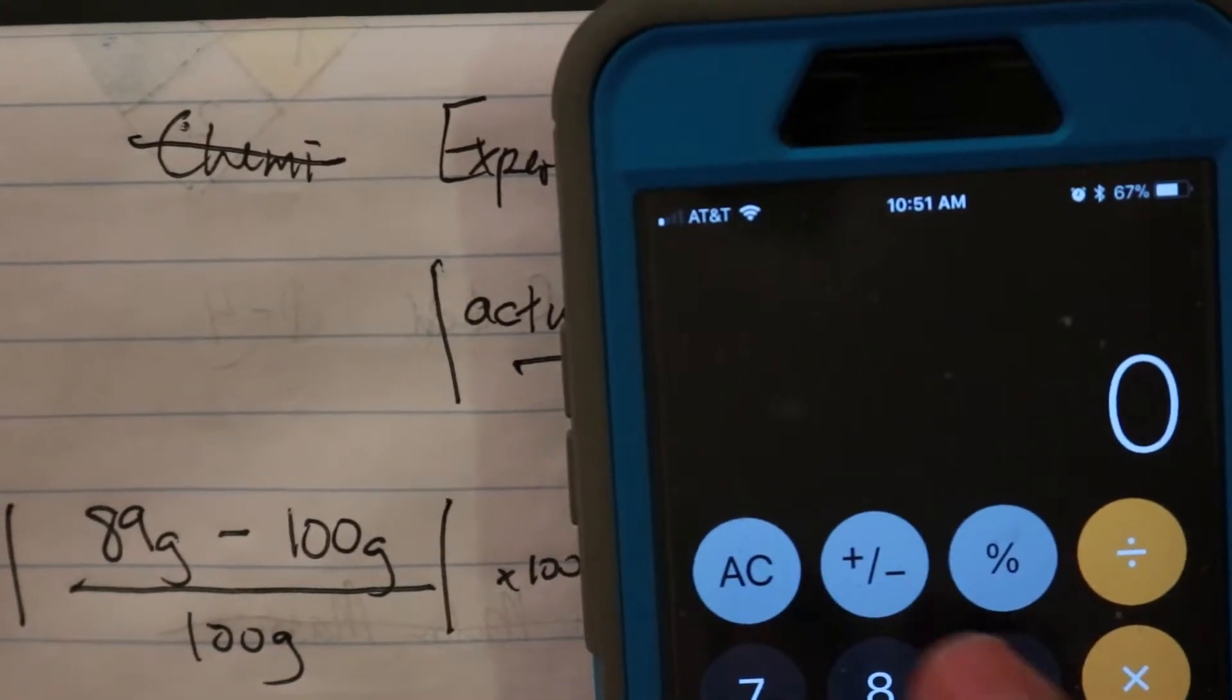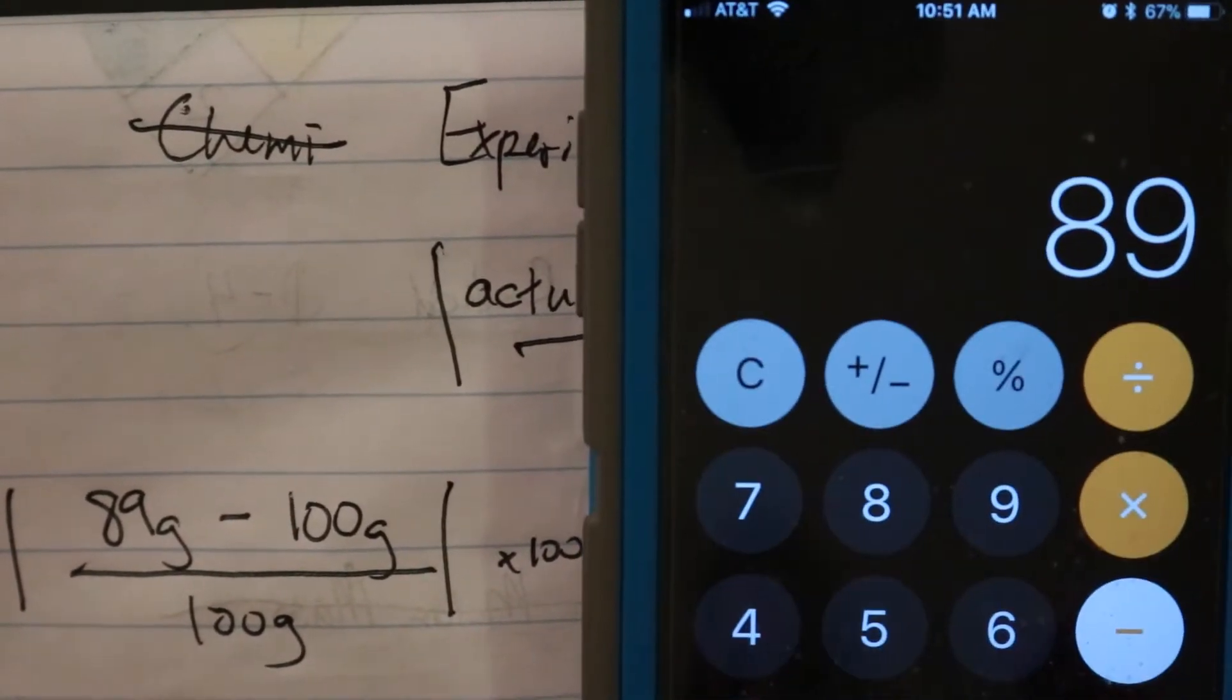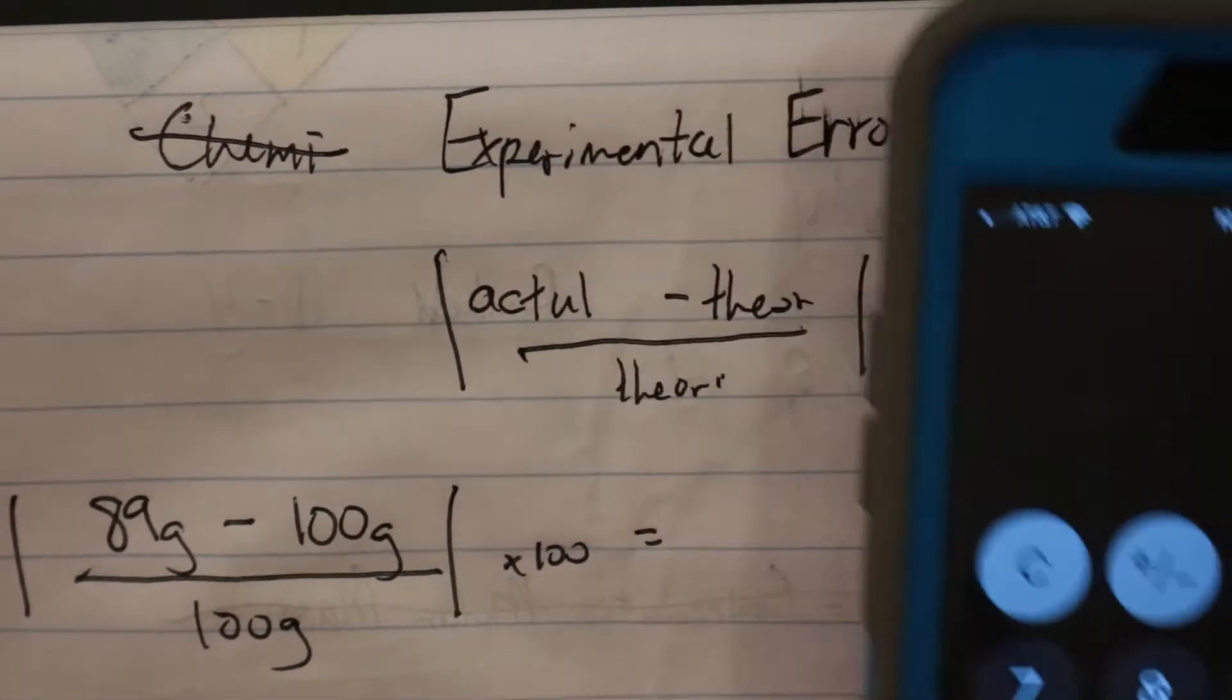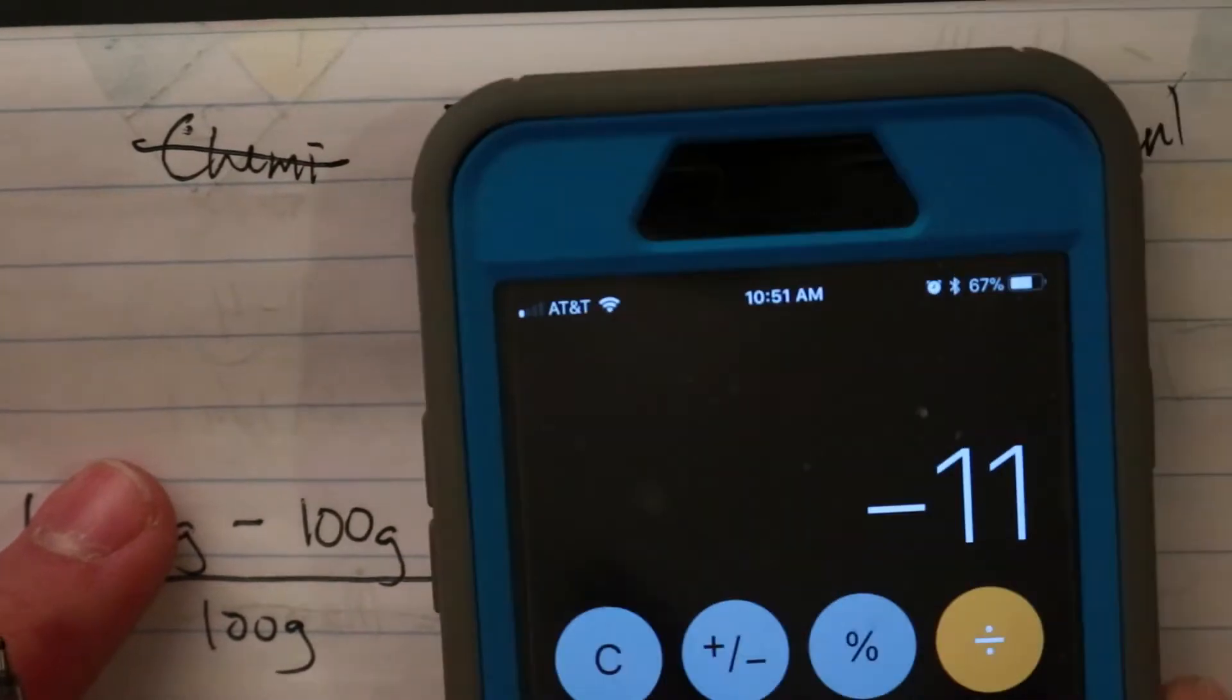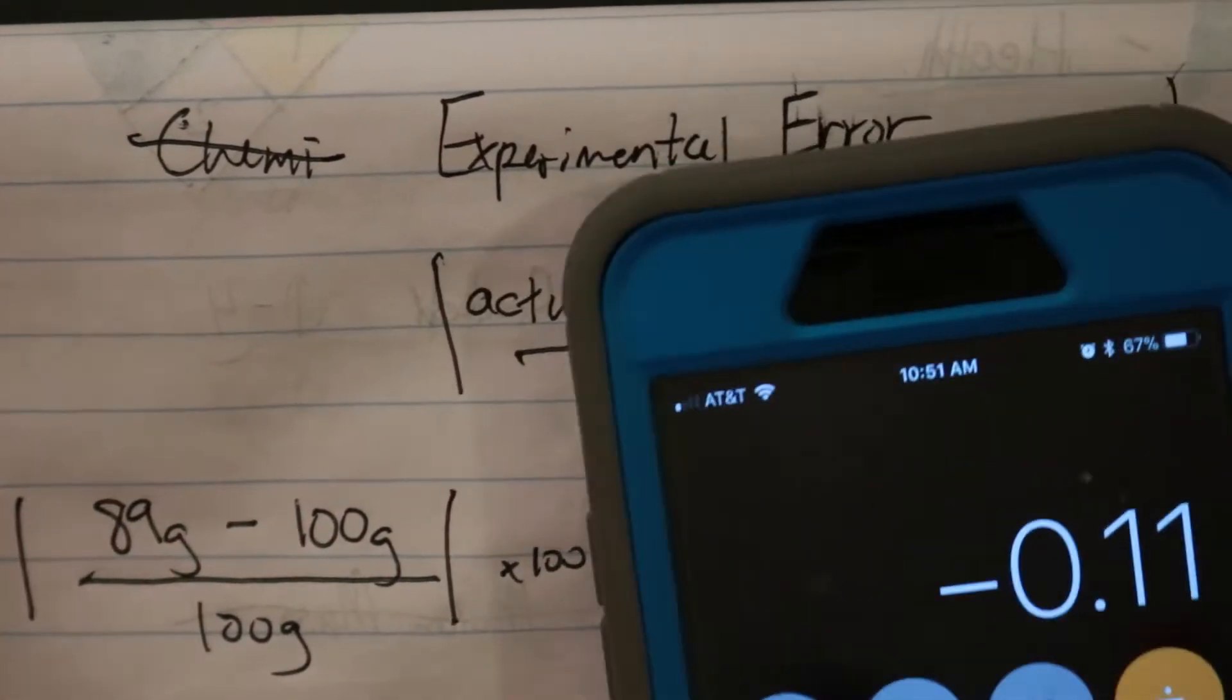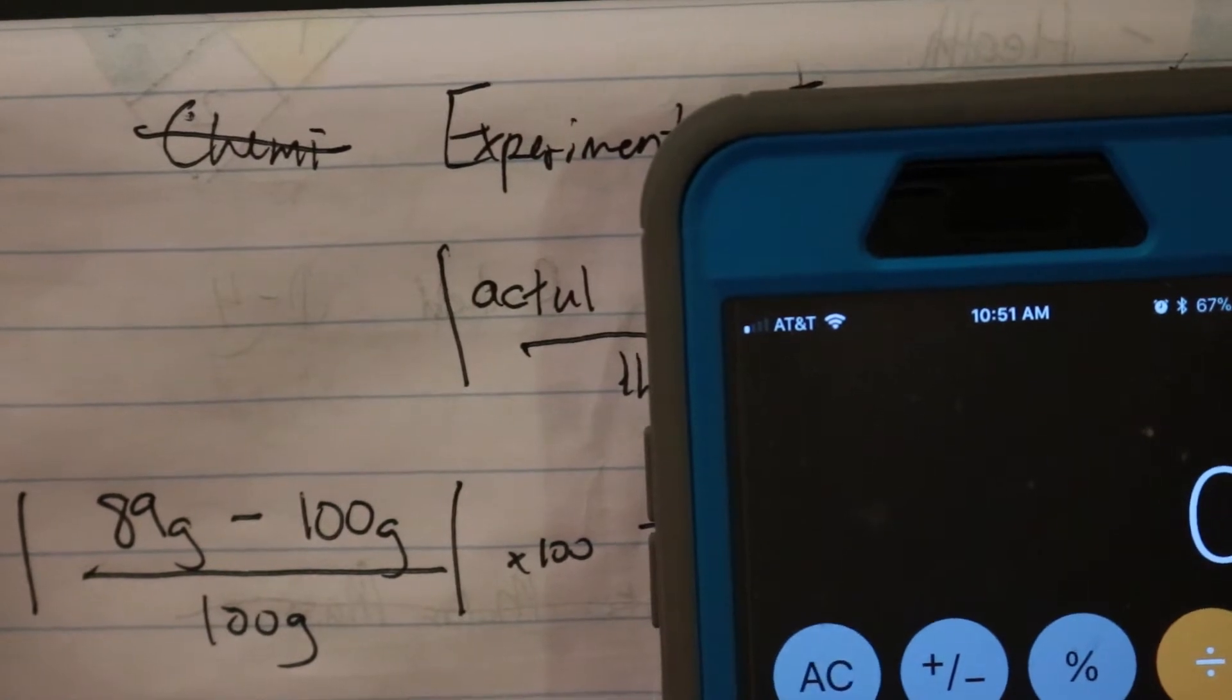So I'm going to take 89 minus 100, and I get negative 11, and I'm going to divide this by 100, and I get this number. I'm going to take the absolute value of it, so 0.11, and just times 100.